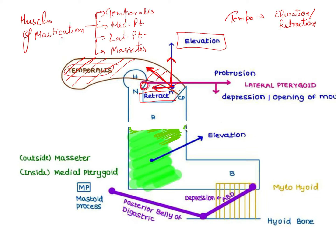At the neck of the condyle there is a muscle attached, known as the lateral pterygoid muscle. Its vector component is broken down into two directions: one is towards the forward direction, known as protrusion, and the other is towards the lower direction, which is depression. So depression and protrusion are both performed by the lateral pterygoid.